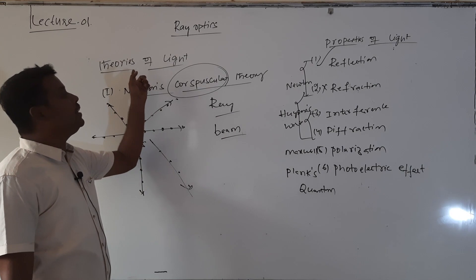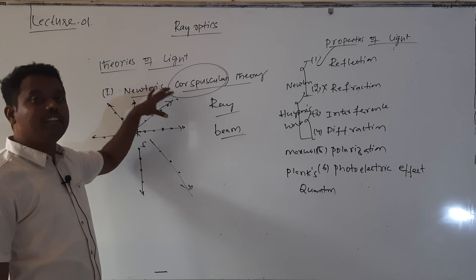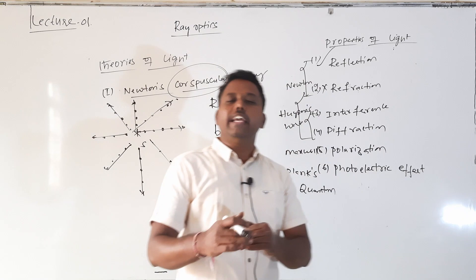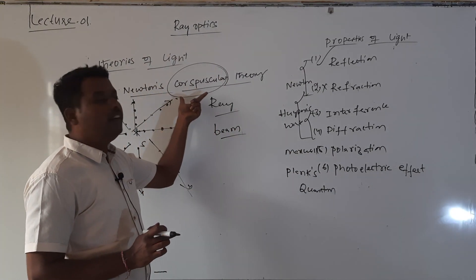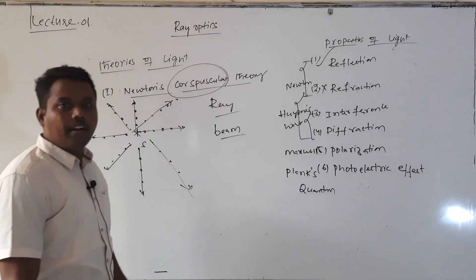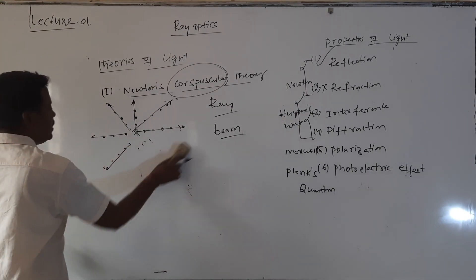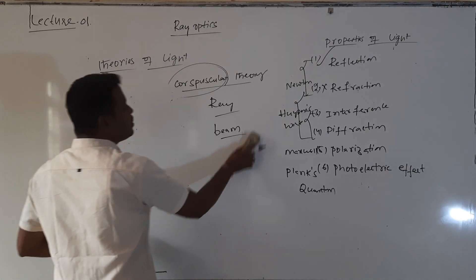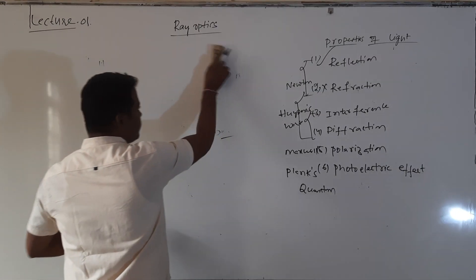Ray optics is also called geometrical optics. What is the main drawback of Newton's Corpuscular Theory — why was this theory discarded — we will come to know at the end of this chapter. That is when we will see why this theory was discarded and why Huygens' Wave Theory came.